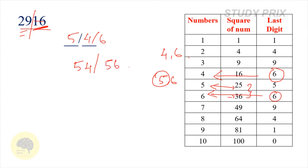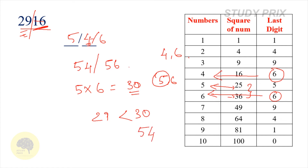To determine whether 54 or 56 is correct, take the first digit 5 and multiply it with the next number 6. The result is 30. The first two digits of our number are 29, and 30 is greater than 29. Since the product is greater than the first two digits, we take the least last digit, which is 4. Therefore the square root of 2916 is 54.